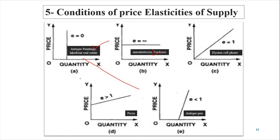The next situation is perfectly elastic supply. Cookies are considered a good example, though it is an unrealistic situation — if the price of cookies is increasing a lot, the supplier will think: why shouldn't I make more and more cookies for more profit? Unit elastic supply: if the price of a product like a cell phone increases a bit, the supplier increases the quantity supplied only a bit. Elastic supply example: pizza — if the price of pizza increases, the producer increases the quantity supplied.